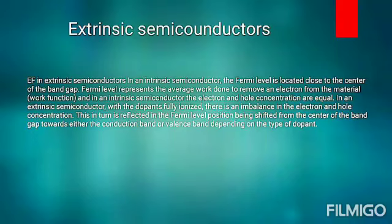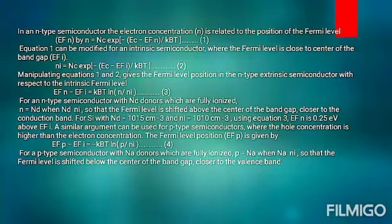Here are four types of equation functions, fully dependent on n-type semiconductors. In an n-type semiconductor, the electron concentration n is related to the position of the Fermi level. Equation one can be modified for an intrinsic semiconductor where the Fermi level is close to the center of the band gap. Manipulating equations one and two gives the Fermi level position in the n-type extrinsic semiconductor, representing the intrinsic Fermi level. For n-type semiconductors with donors fully ionized, the Fermi level is shifted above the center of the band gap, closer to the conduction band.